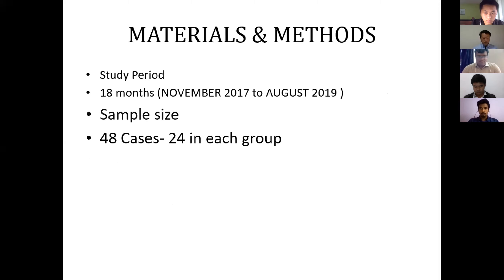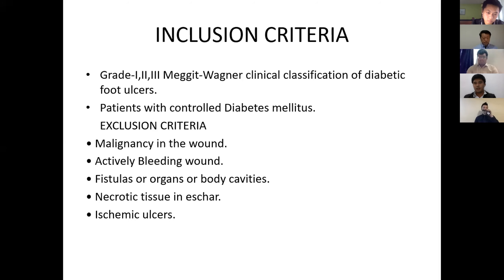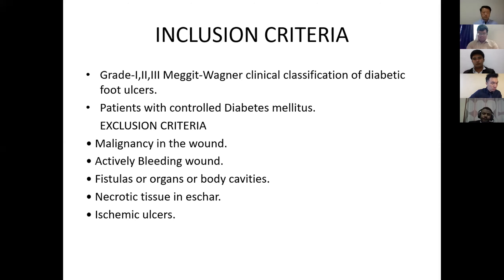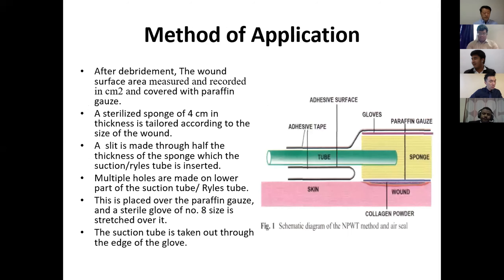Materials and Methods: My sample size is 48 cases, with 24 patients in each group. The inclusion criteria, according to the Wagner's classification of diabetic foot ulcers, includes Grade 1 (superficial) and Grade 2 and Grade 3 (deep), in patients with controlled diabetes. The exclusion criteria includes malignancy, active bleeding, necrotic tissue, and ischemic wounds.